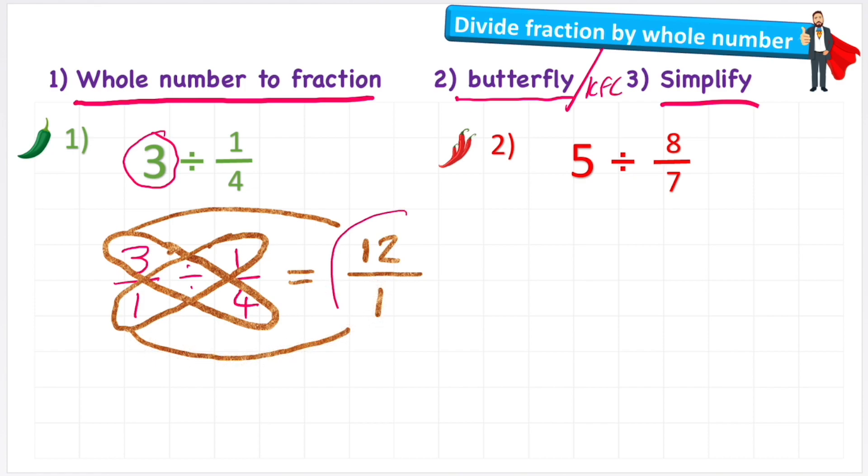And again, we can see that this is now an improper fraction with a top-heavy numerator, so I can convert this into a mixed number which actually ends up at just being 12, because 12 divided by 1 is 12. So my answer to 3 divided by 1/4 equals 12.